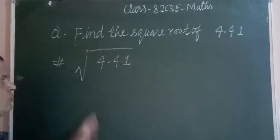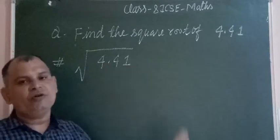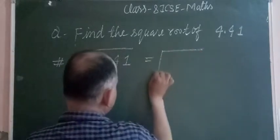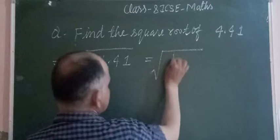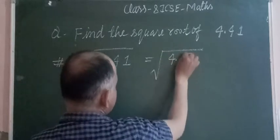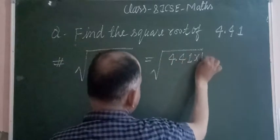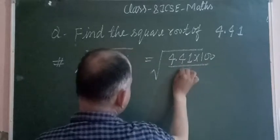We write it as 4.41. Now we change this decimal number into a fraction. We multiply 4.41 by 100 because it has two decimal places.